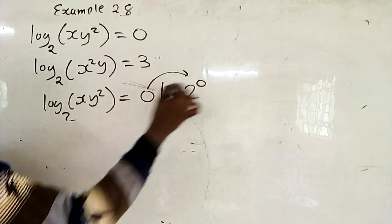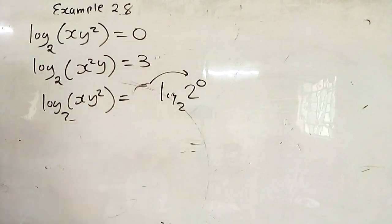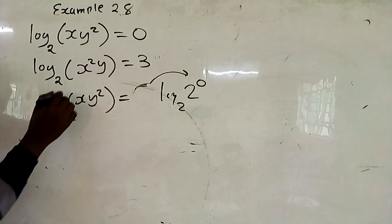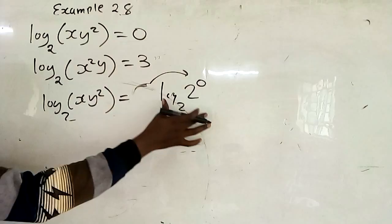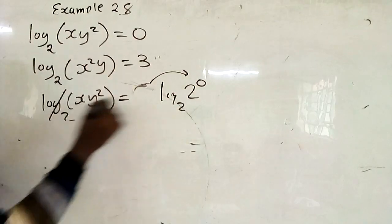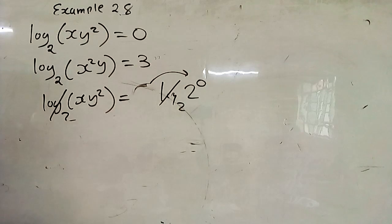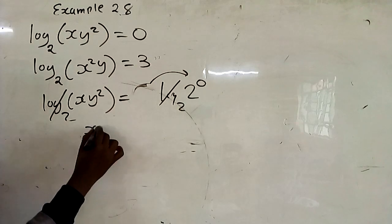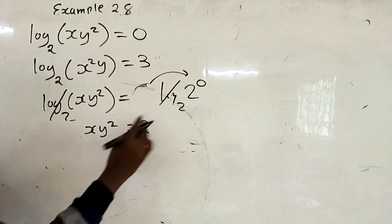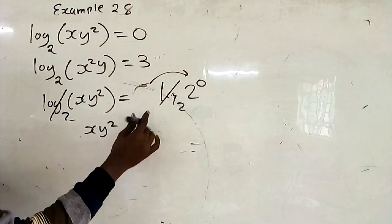This 0 becomes the power. Then you ignore the log on either side of the equation — you remain with xy² equals 2 raised to power 0, which is 1.